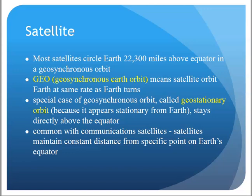Geosynchronous means the satellite orbits the Earth at the same rate as the Earth turns — it's roughly following the Earth's rotation at that height. A geostationary orbit is a special case where the satellite appears at the same spot above the Earth all the time, directly above the equator. That becomes handy for things like satellite radio and satellite TV, because it's always in the same spot and I can point a dish at it and always receive data from that satellite.